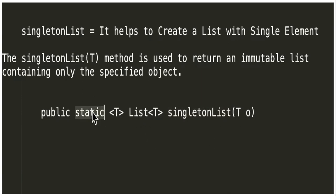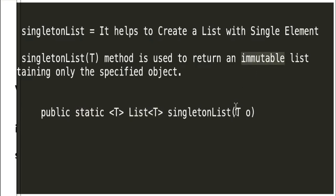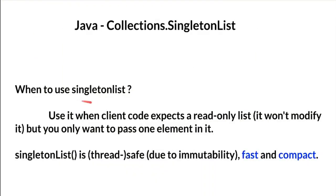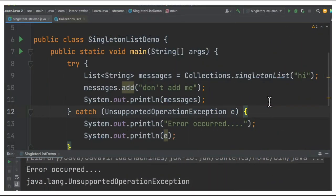It is a static method, and the list it returns is an immutable list. The next question is when to use a singleton list: use it when the client expects a read-only list and needs only one element in it. Singleton list is thread-safe, fast, and compact.